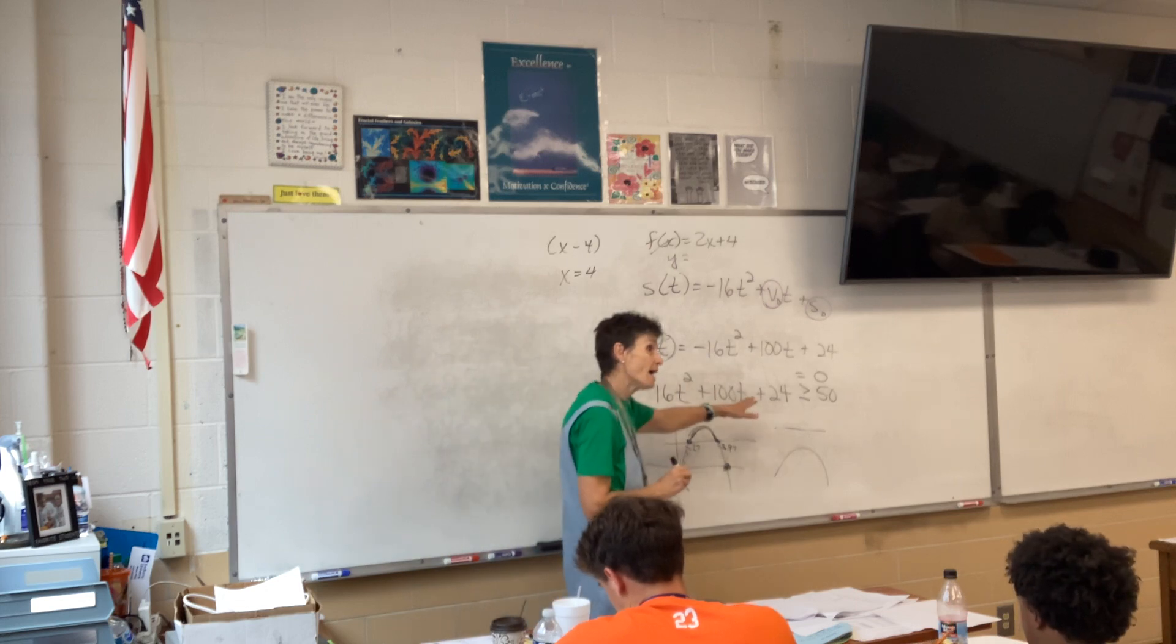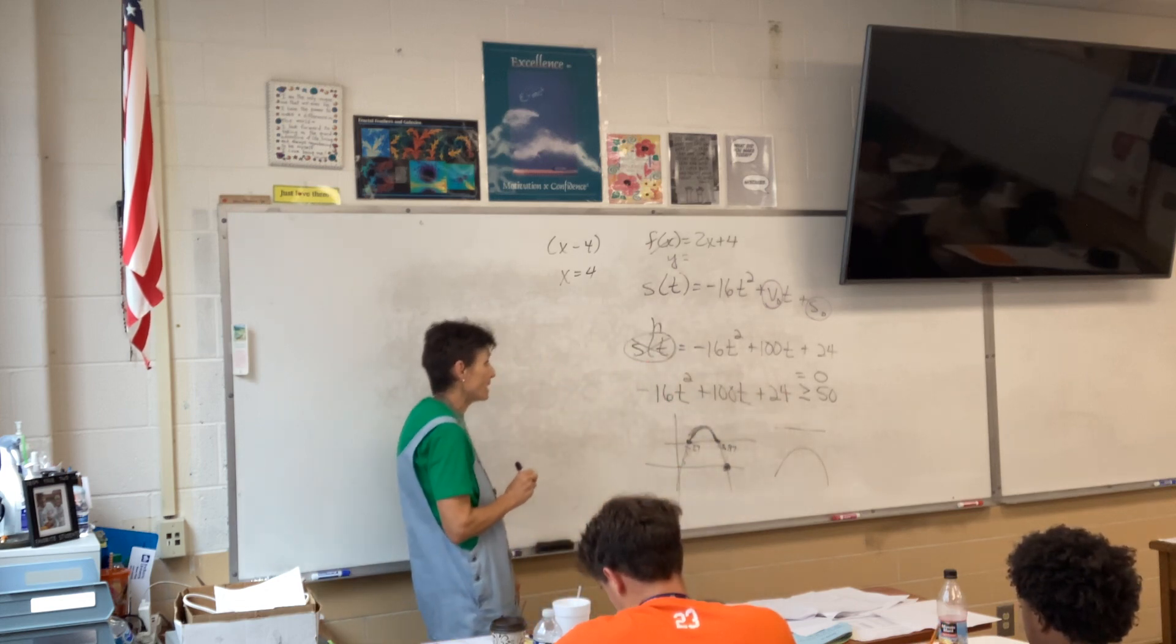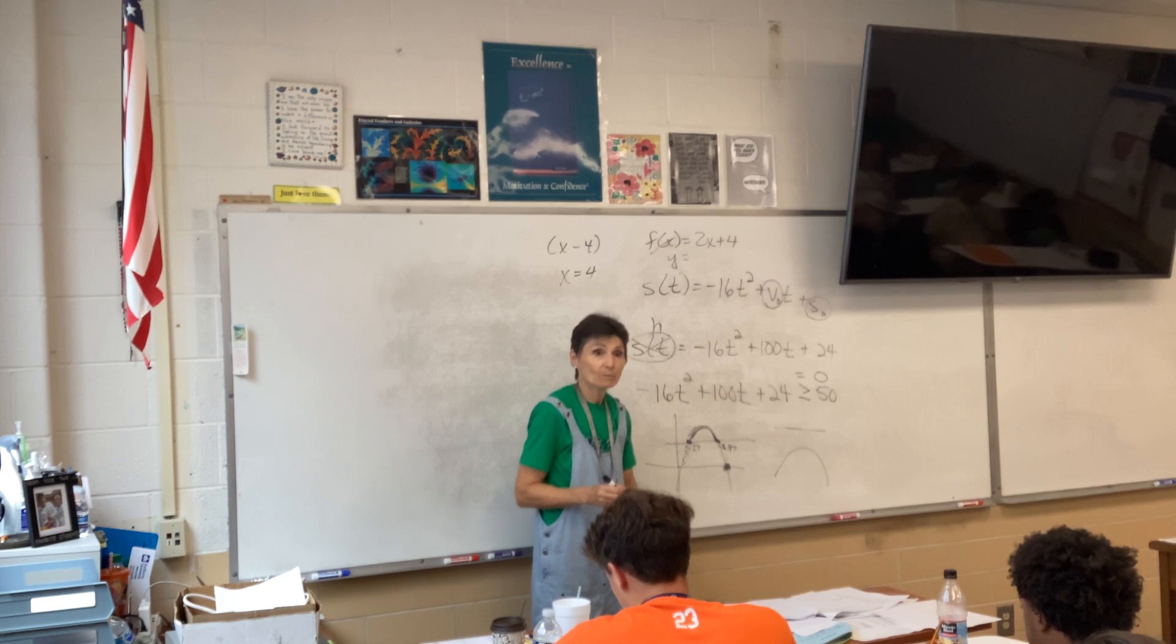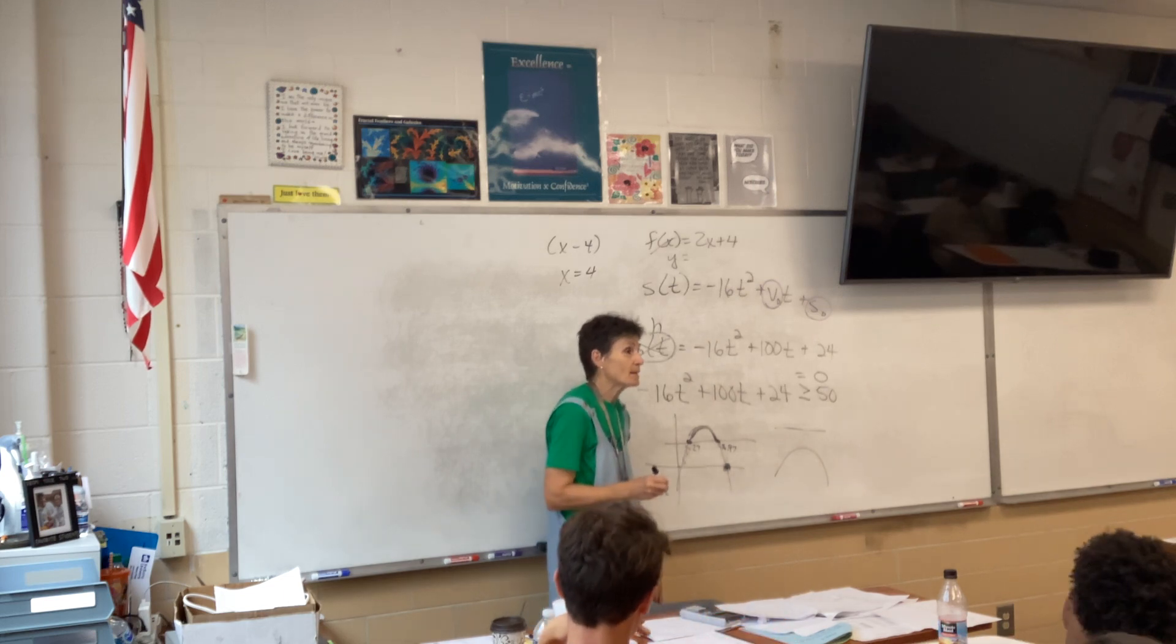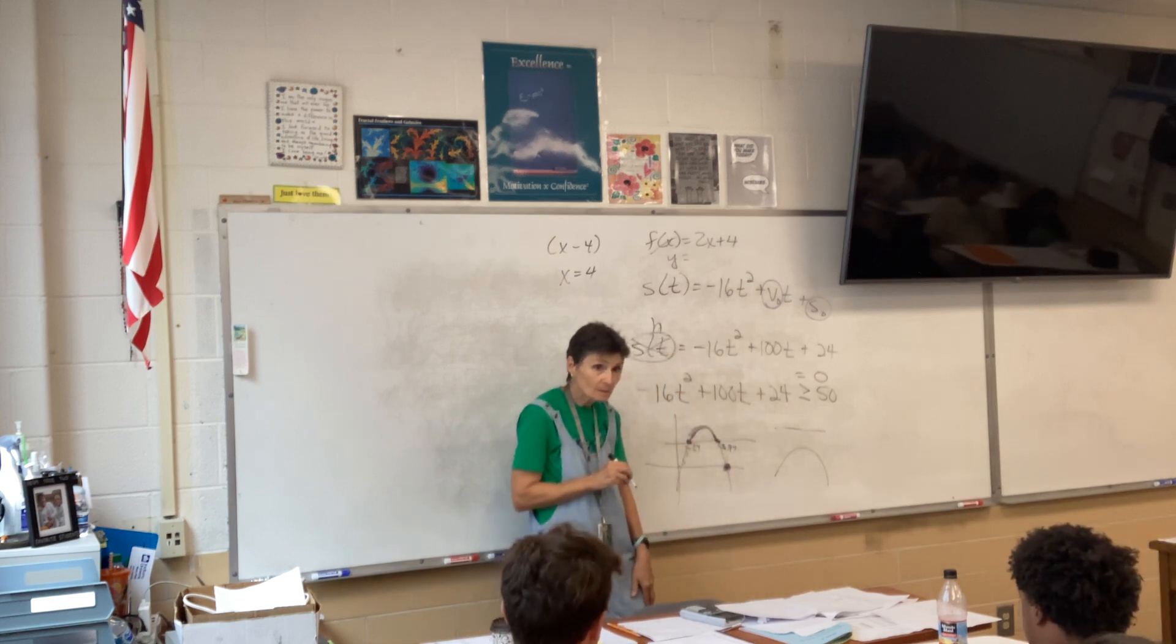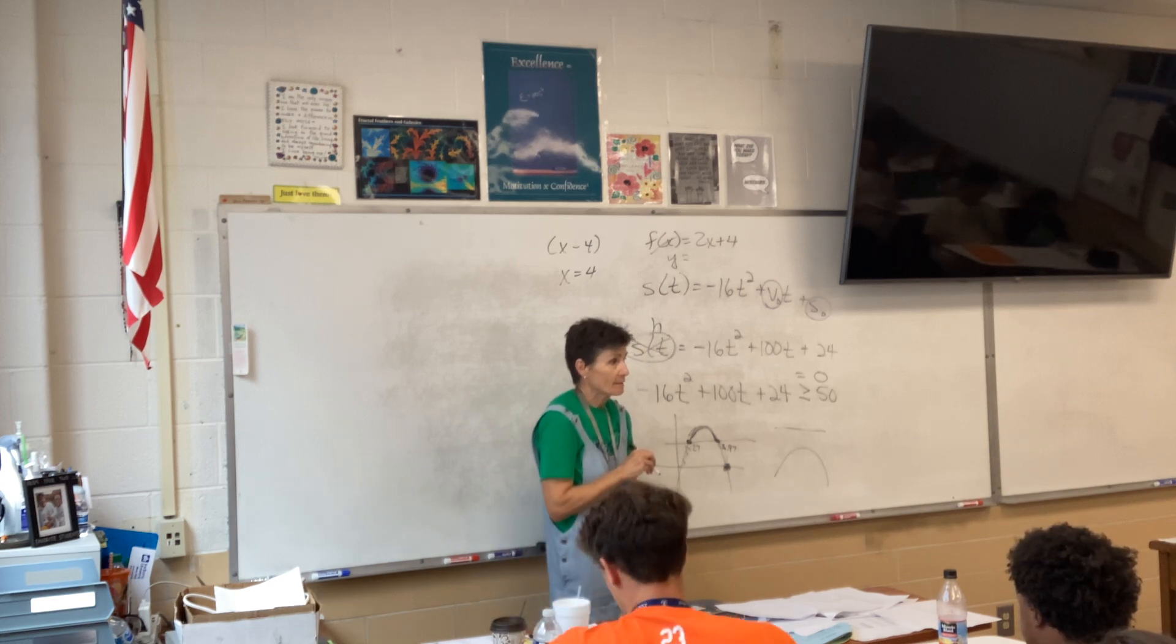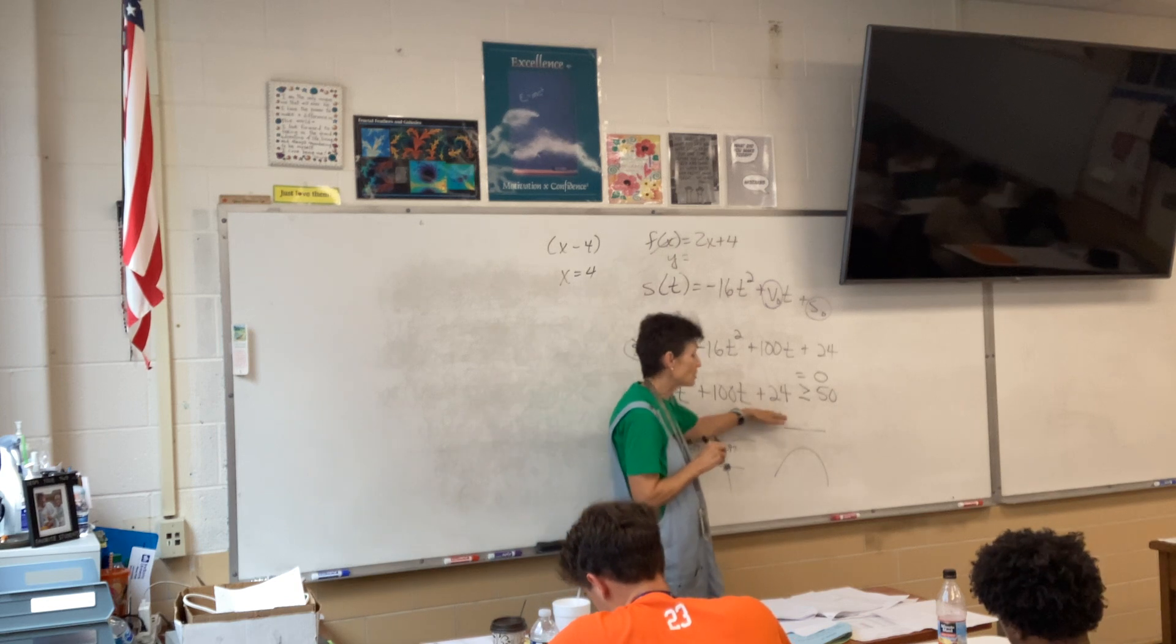We want to know that point right there. Okay? So what are you going to do? Instead of putting greater than or equal to 50 over here, you're going to put equals 0. Isn't that when the ball is on the ground? Now, you can graph that.